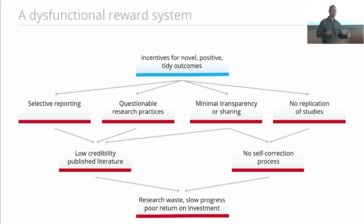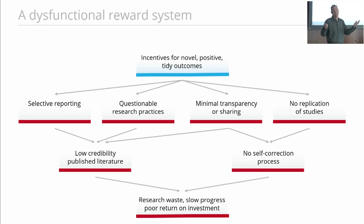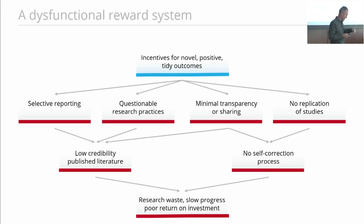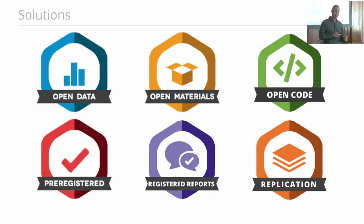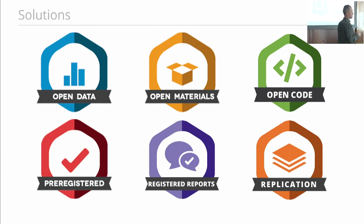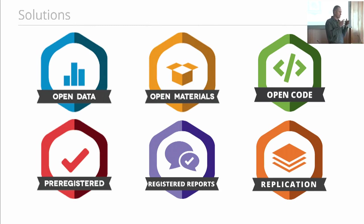All of that just produces waste — waste in the system, friction in the pace of discovery that isn't necessary. If we nudge the system and how it's rewarded, we might be able to accelerate that process more effectively. So there are many different solutions that we might conceptualize. Our focus has been on these as direct mechanisms for trying to deal with that model I just described.